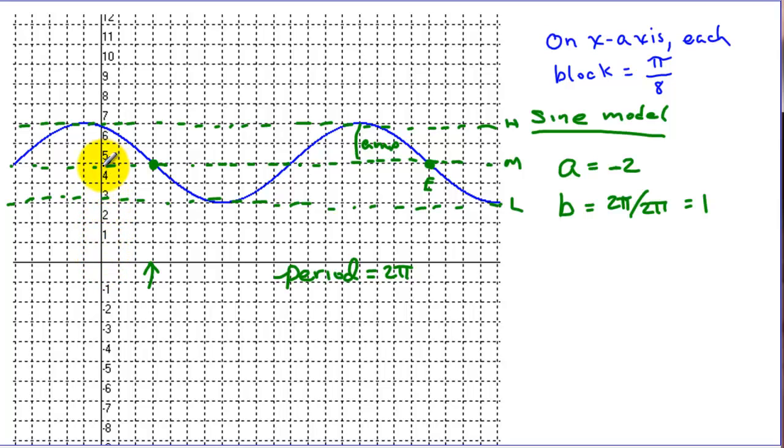Our midline is up at 5, so we were shifted up 5 units. So d is 5. To find c, our formula was the value of b, which is 1, times our starting point, how far we shifted. We shifted to the right 1, 2, 3 blocks, so 3π over 8. 1 times 3π over 8 is 3π over 8.